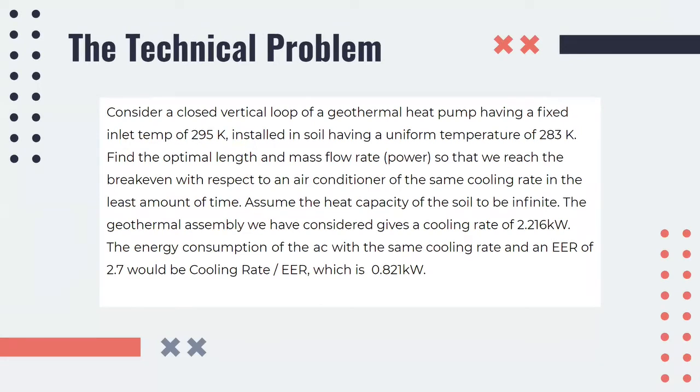Now, we consider the technical problem that we are about to solve. We consider a closed vertical loop of a geothermal heat pump having fixed inlet temperature of 295 Kelvin, installed in soil having a uniform temperature of 283 Kelvin. We need to find the optimal length and the mass flow rate, i.e. power, so that we reach the break even with respect to an air conditioner of the same cooling rate in the least amount of time. Here, we assume that the heat capacity of the soil is infinite.